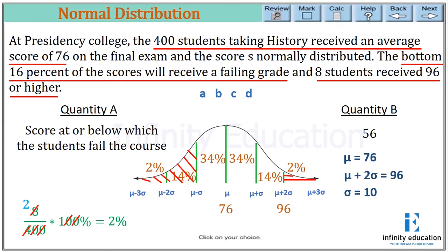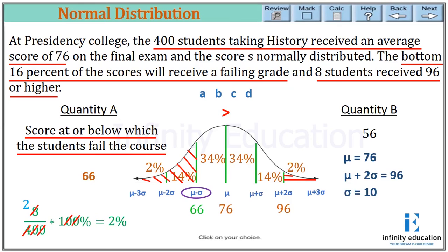In Quantity A, they ask for the score at or below which students fail the course, which is mu minus sigma. With mu = 76 and sigma = 10, mu minus sigma = 66. So Quantity A is 66 and Quantity B is 56. Quantity A is greater, so A is the answer.